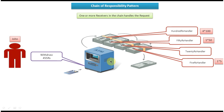Here you can see the ATM, which will use these handlers. On the left side you can see John, who is a person. Suppose John wants to withdraw 455 Rupees from the ATM. He goes to the ATM and inserts his debit card. The ATM will ask for his PIN number, he enters it, and if the PIN is correct, John enters the amount he wants to withdraw — 455 Rupees — and confirms.